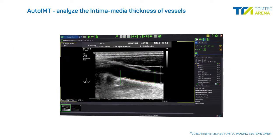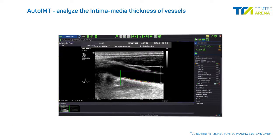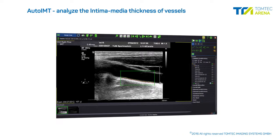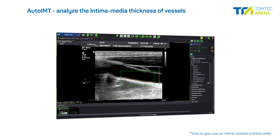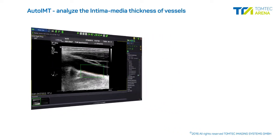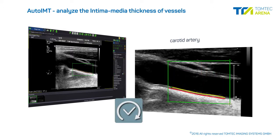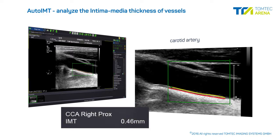AutoIMT is a fast, intuitive, and reliable method to analyze the intima media thickness of vessels such as the carotid artery. By defining a region of interest on a vascular long axis view, AutoIMT automatically calculates the mean intima media thickness. Measurement values are automatically transferred to the measurement worksheet.